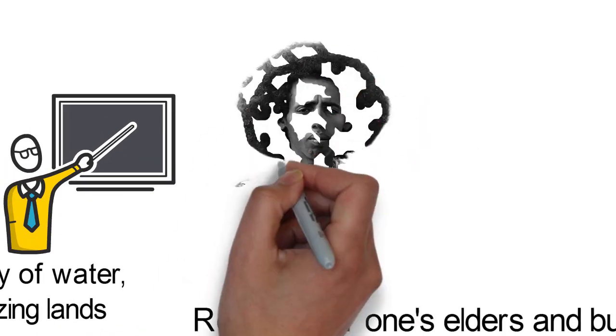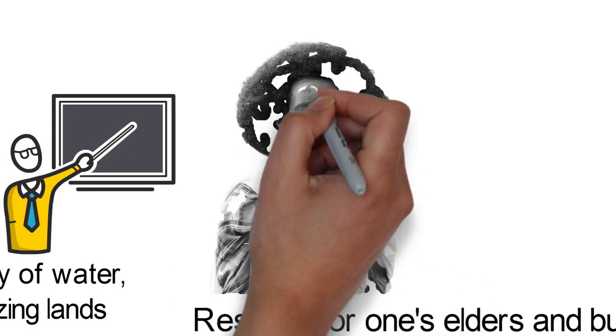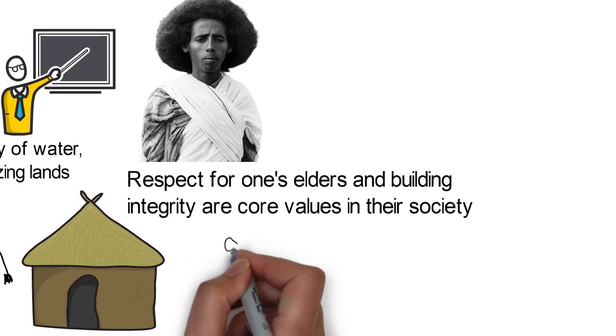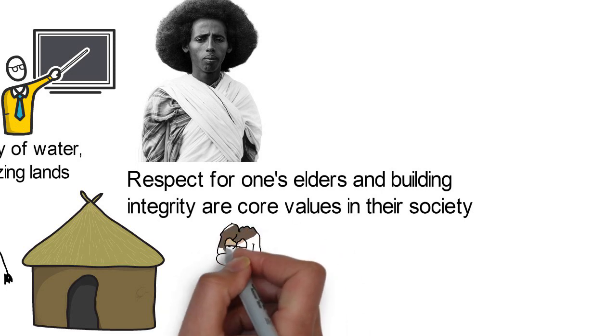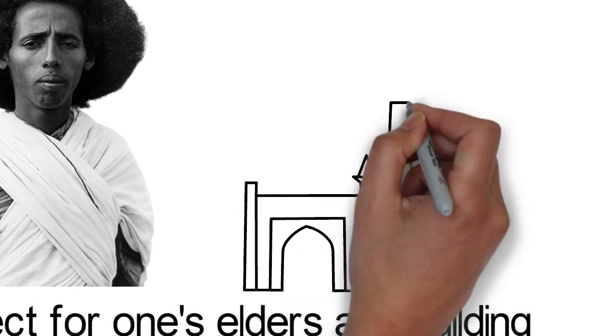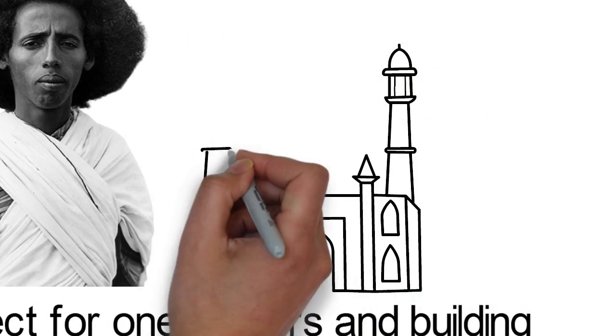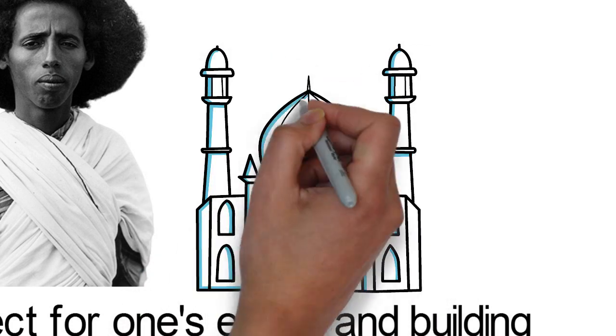The Somalis are essentially Sunni Muslims, and their faith is a crucial aspect of their daily life. Religious experts known as wadads are often consulted for blessings, charms, or advice on worldly matters. In the cities, some Islamic groups inspired by the Egyptian Muslim Brotherhood have begun to emerge with a more orthodox form of Islam.